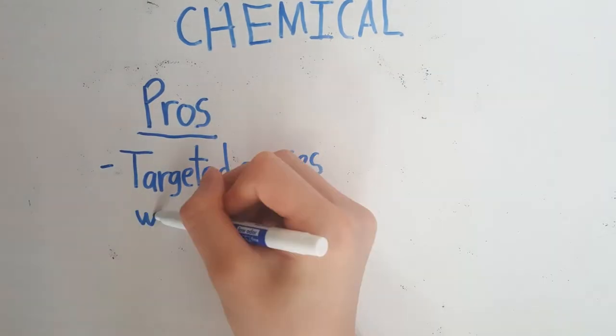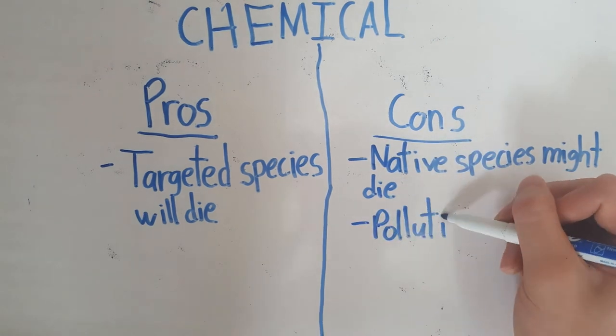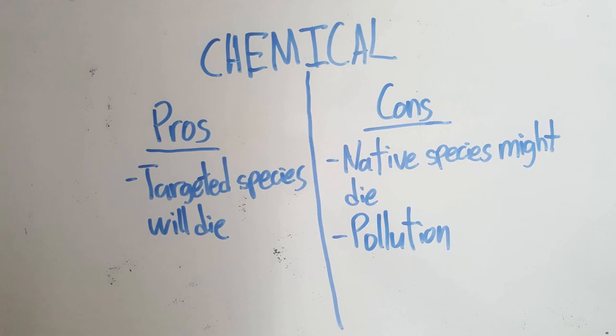The pros of chemical control is that the invasive species will die. The cons are that the native species may also die, and the environment may be polluted.